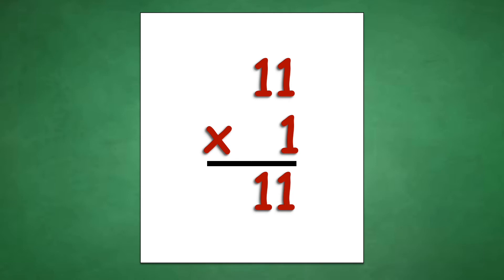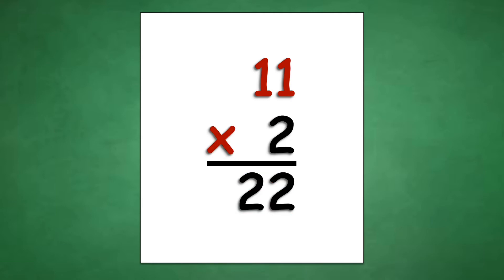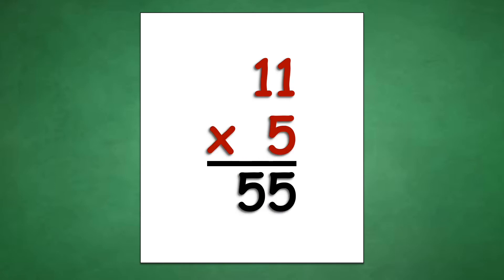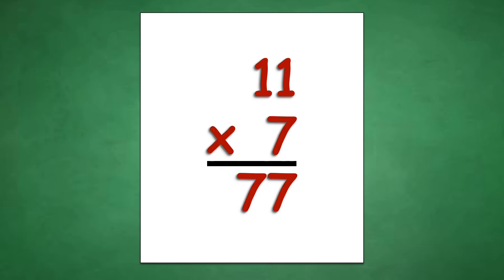Table of 11: 11 times 1 equals 11, 11 times 2 equals 22, 11 times 3 equals 33, 11 times 4 equals 44, 11 times 5 equals 55, 11 times 6 equals 66, 11 times 7 equals 77, 11 times 8 equals 88, 11 times 9 equals 99, 11 times 10 equals 110.